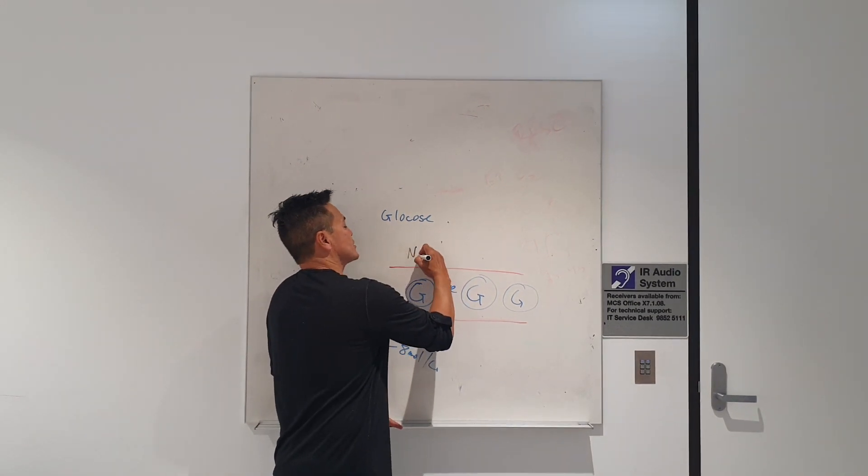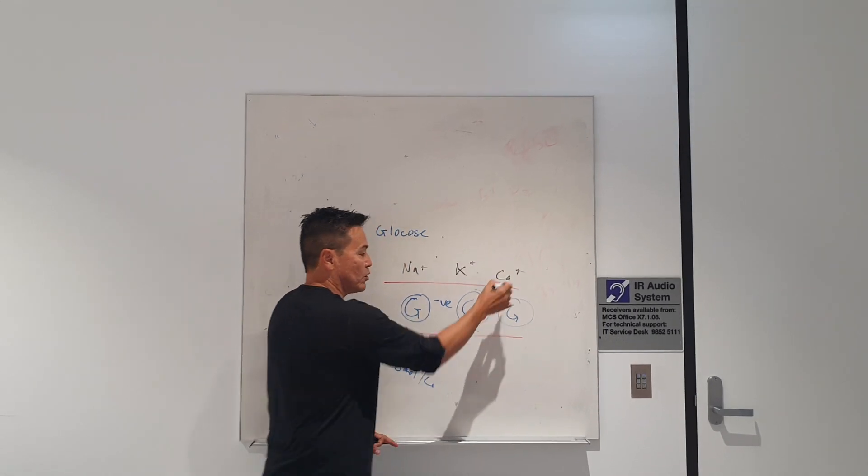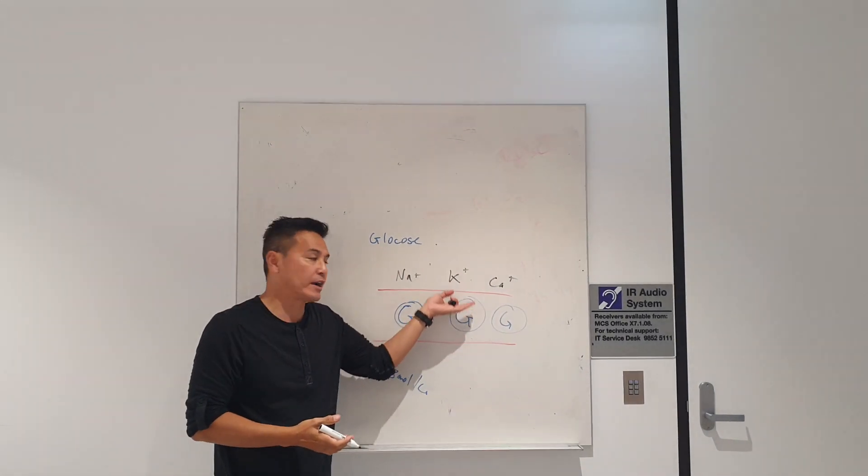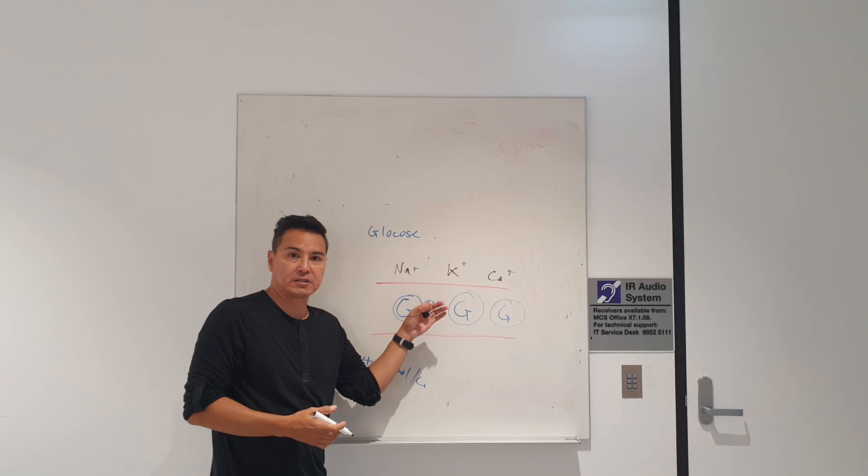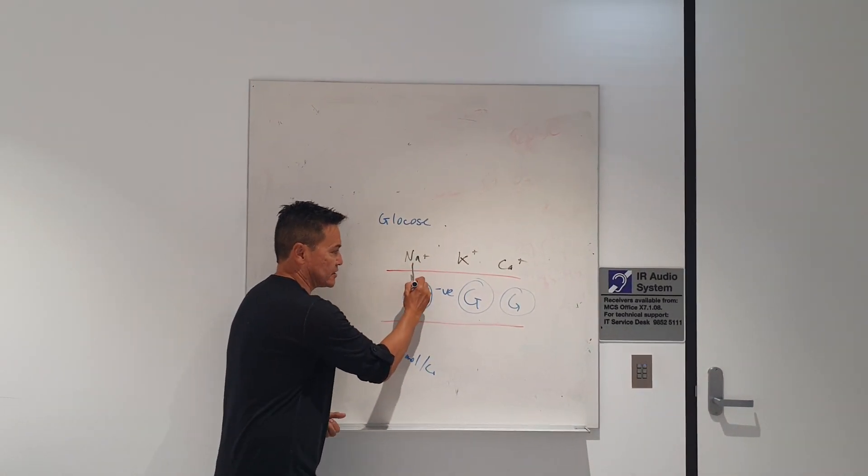When that happens, all this stuff that's outside the blood vessels - things like sodium and K+ (if you notice there's a plus sign) and calcium - they all get unusually attracted to the glucose because of its strongly negative charge now inside your blood.